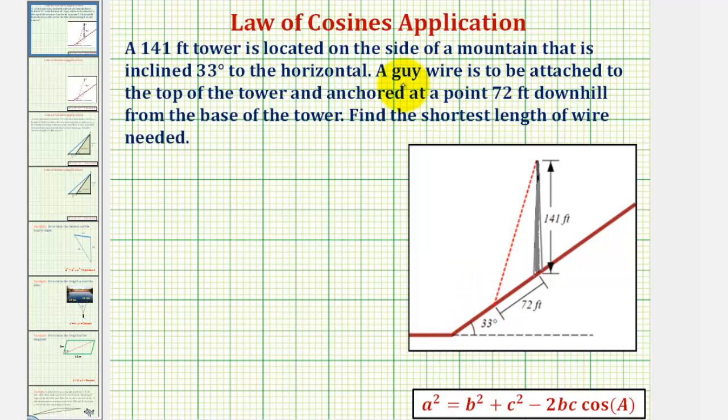A guy wire, which is a support wire, is attached to the top of the tower and anchored at a point 72 feet downhill from the base of the tower. So this red segment here would be the guy wire. And because it's anchored 72 feet downhill from the base of the tower, we know the measure of this length here is 72 feet.